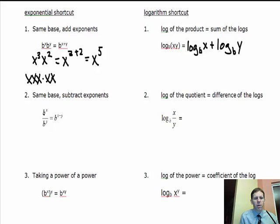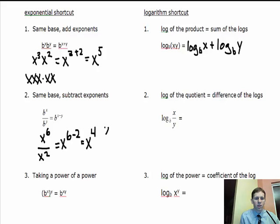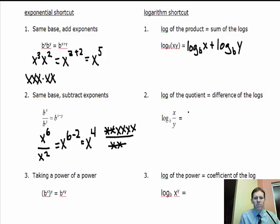If you're dividing exponents with the same base, you subtract the exponents: b to the x over b to the y equals b to the x minus y. So x to the sixth over x squared gives x to the fourth, because six minus two is four. We have a similar rule for logarithms — the log of a quotient equals the difference of the logs. Log base b of x over y equals log base b of x minus log base b of y.